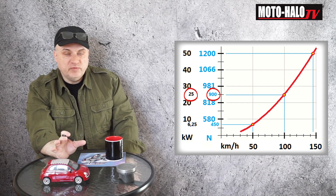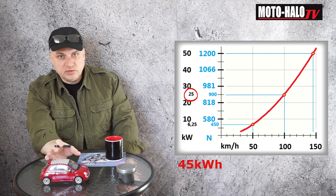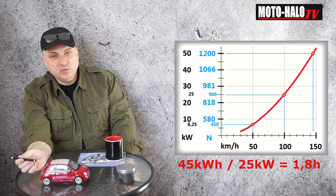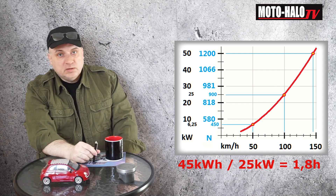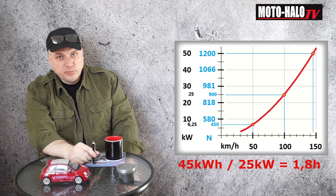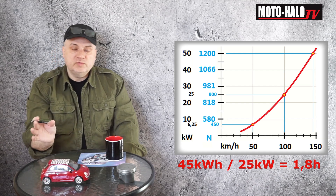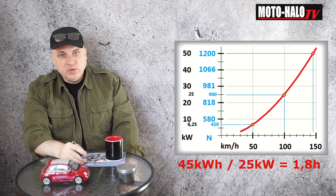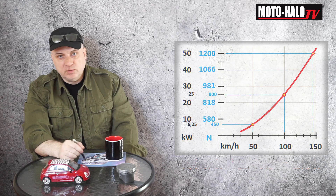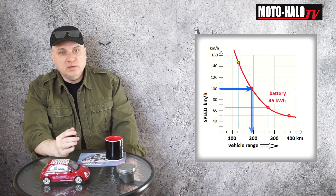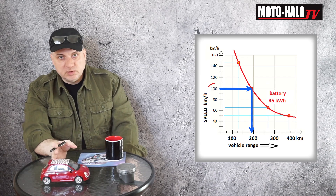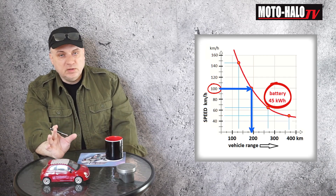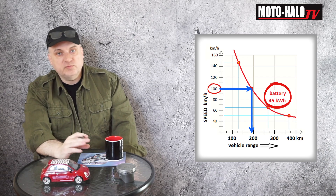So the same way, we divide the available 45 kilowatt-hours on board by the 25 kilowatts required to maintain 100 kilometers an hour. That gives us 1.8 hours. When we travel at 100 kilometers an hour for 1.8 hours, we make 180 kilometers. It is very simple to calculate. After 180 kilometers, the 45 kilowatt-hours of energy available on board is fully utilized.